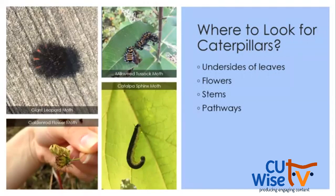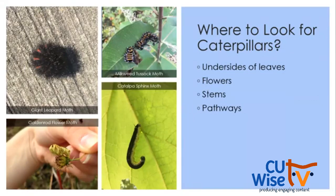Where should we look for caterpillars? Many feed on the bottoms or tops of leaves. I found a catalpa sphinx moth by looking up at a catalpa tree. Tussock moth caterpillars were on the underside and top of leaves. Sometimes we can look on flowers — I found a goldenrod flower moth caterpillar on the end of a flower. If you can also take a picture of the plant it's on and identify the plant, that's a really helpful clue in narrowing down the species.